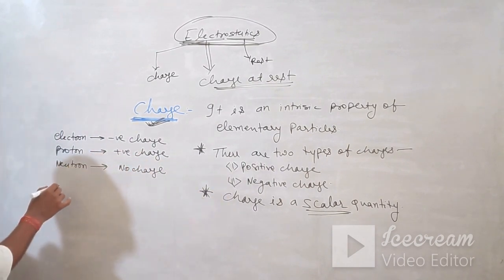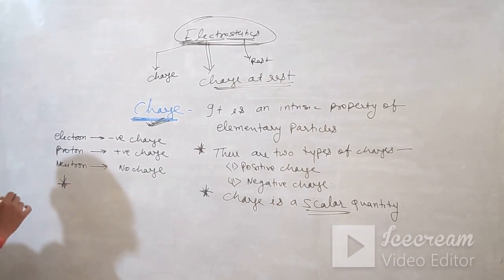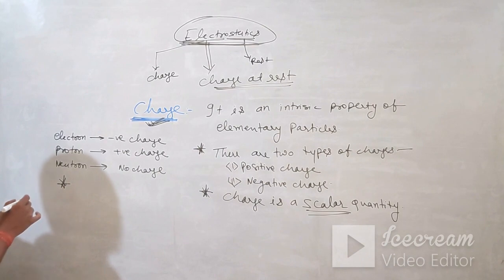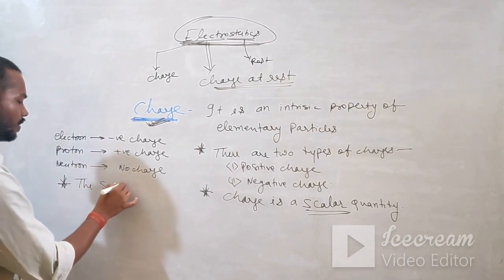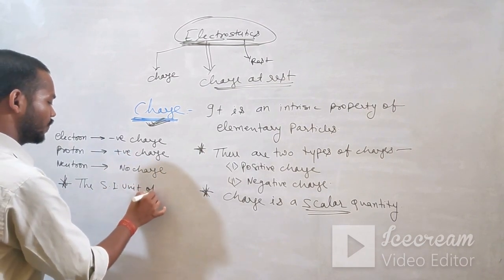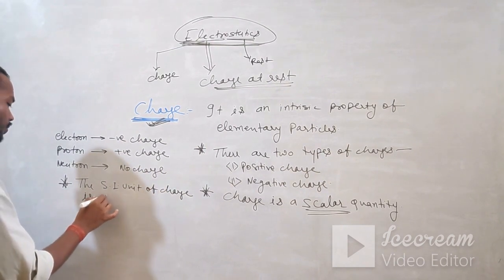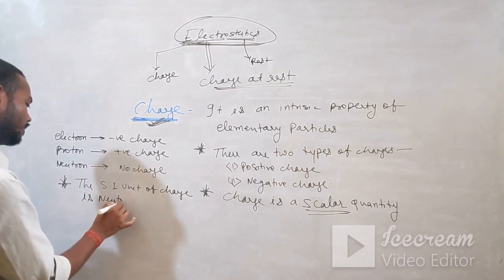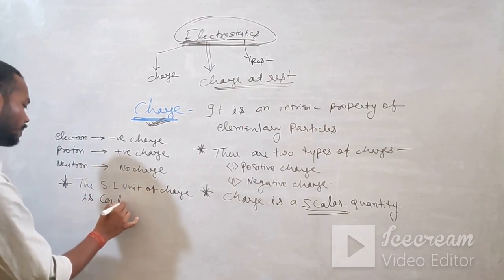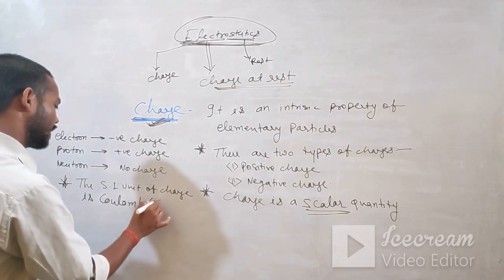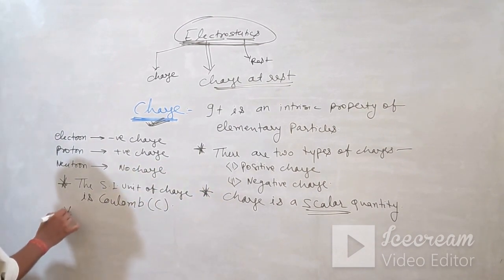Since charge is a physical quantity, we can measure it. It is measured in Coulombs. The SI unit of charge is Coulomb, denoted by capital C.